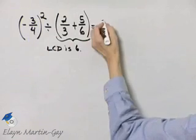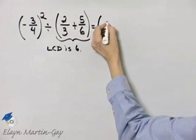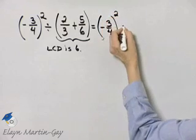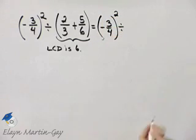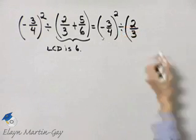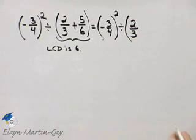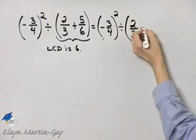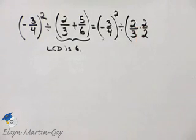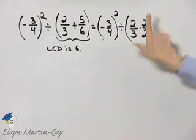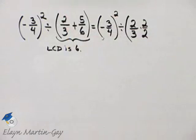Now let me go ahead and just rewrite this for the moment. That's negative three-fourths quantity squared divided by, how do I write two-thirds as an equivalent fraction but with a denominator of six? Well we know three times two is six, so I multiply the fraction by two over two because that's like multiplying by one, it does not change the value of the fraction.